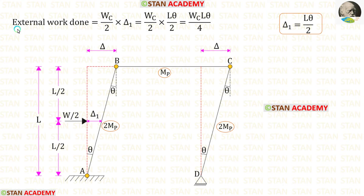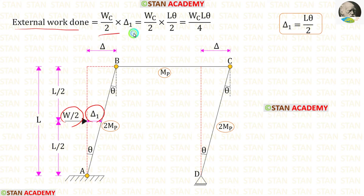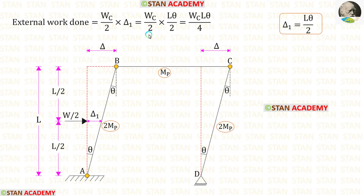Now let us find the external work done. We multiply the load W/2 with the displacement δ1. For δ1 we apply Lθ/2. After multiplying, the external work done equals Wc·Lθ/4.